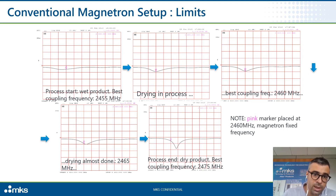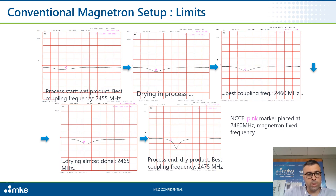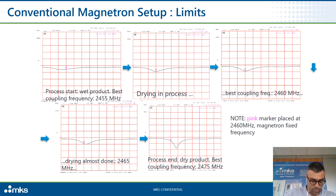You can see that when the process starts with a wet product, the best coupling frequency is slightly below — around 2455 MHz. Then, during the drying process, we arrive at a specific point where the best coupling frequency is 2460 MHz. But then, the best coupling frequency moves again. At the end of the process, we are close to 2480 MHz, which means we are almost 20 MHz away from the emission frequency of the magnetron.